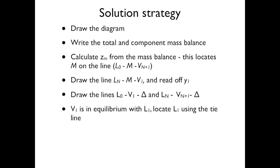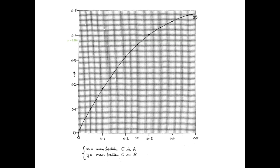Point V₁ is by definition in equilibrium with L₁. As is common, we assume that in every single stage equilibrium is reached, and so the streams exiting each stage are in equilibrium. We can locate point L₁, which corresponds to V₁, using a tie line. To obtain the values to draw that tie line, we look at our x-y distribution chart, which shows the distribution of C between the two phases.